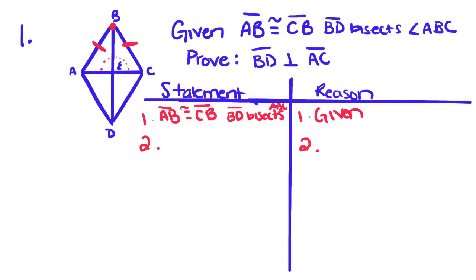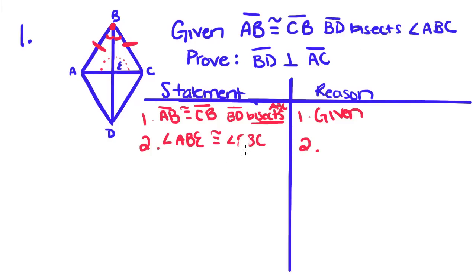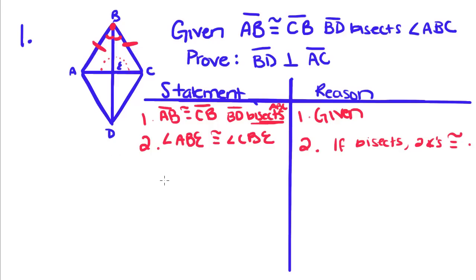Next we're going to take the definition of bisect, which we talked about in our last lesson, and rewrite the next statement. If BD bisects angle ABC, that means it splits it up into two congruent angles. So angle ABE is congruent to angle CBE. And that reason is: BD bisects, forming two congruent angles.